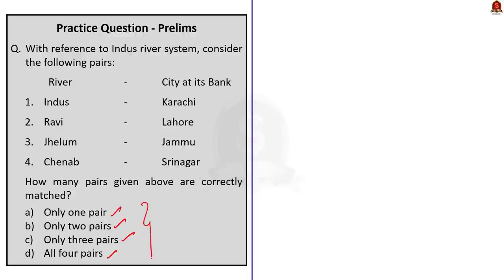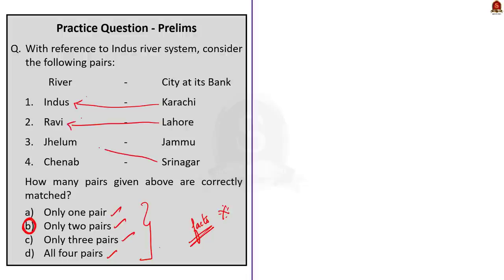The correct answer is option B — only two pairs. Karachi is located on the banks of River Indus, and Lahore is located on the banks of River Ravi — both correct. However, Srinagar is actually located on the banks of the Jhelum River, and Jammu is located on the banks of River Tavi — not Jhelum and Chenab as the question suggested. So only two pairs are correctly matched.